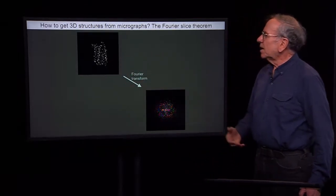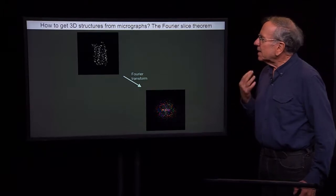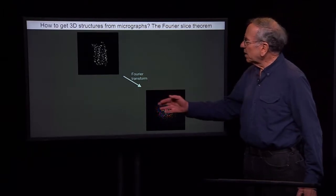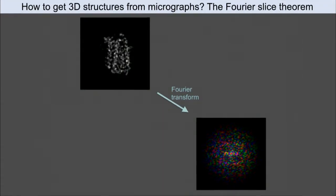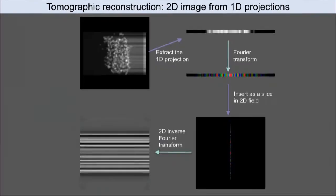Any two-dimensional, three-dimensional density distribution has an equivalent representation that is obtained by the Fourier transform. And the Fourier slice theorem says that if we construct a projection,